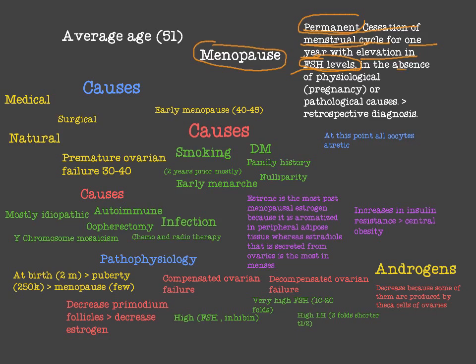In the absence of physiological or pathological causes — for example, in physiological cases like pregnancy, we can have amenorrhea for around one year, but there is something that led to the absence of the menstrual cycle. In menopause, it should be a permanent cessation of the menstrual cycle forever. To diagnose it, one year must have passed — so it is a retrospective diagnosis. You can only diagnose it after one year, looking back, with an elevation in FSH levels.